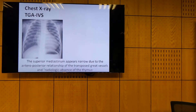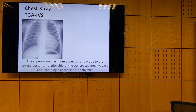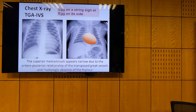Historically, and for exams: on chest X-ray in simple TGA, we usually have a superior mediastinal narrowing compared to the heart — the narrow mediastinum due to the relationship between the aorta and pulmonary artery in an anterior-posterior relationship. This is called the 'egg-on-side' or 'egg-on-string' sign, which is historical and very useful for exams.